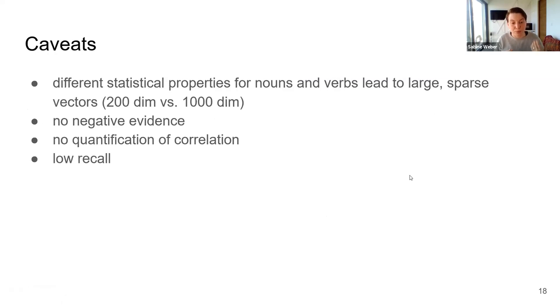This method that I just presented to you comes with several caveats that I want to address here. The different statistical properties for nouns and verbs lead to large and sparse vectors. Because in the English language the vast majority of words are nouns, Geffet and Dagan could create quite meaningful representations using 200 dimensional vectors. Whereas verbs are much rarer, and as we've seen in our previous example with the types, they are really dependent on their context. And that's why we end up using larger and sparser vectors to create meaningful representation for them.